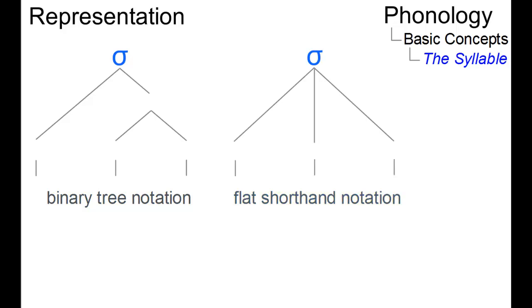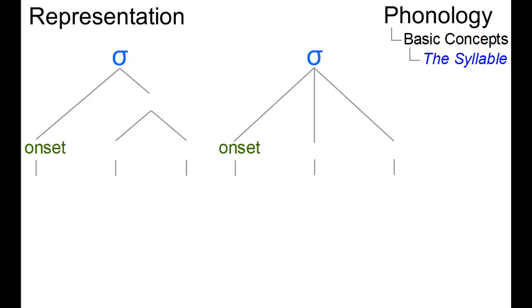The component parts are in both cases an optional onset that starts the syllable, an optional coda at the end and an obligatory peak in the middle.